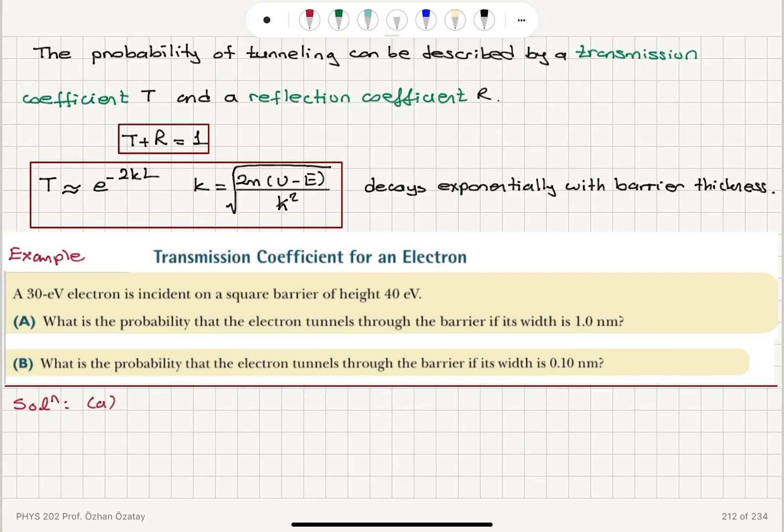Let's look at an example for tunneling. Transmission coefficient for an electron. A 30 electron volt electron is incident on a square barrier of height 40 electron volts.